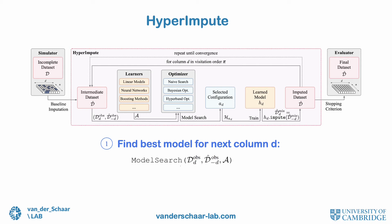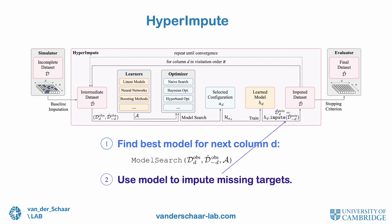We do so in three steps. Step 1, we perform model search to find the best column imputation model. Step 2, we fit the selected model and use the learned model to perform imputation. Step 3, we update the dataset with imputed values and iterate over columns until convergence.